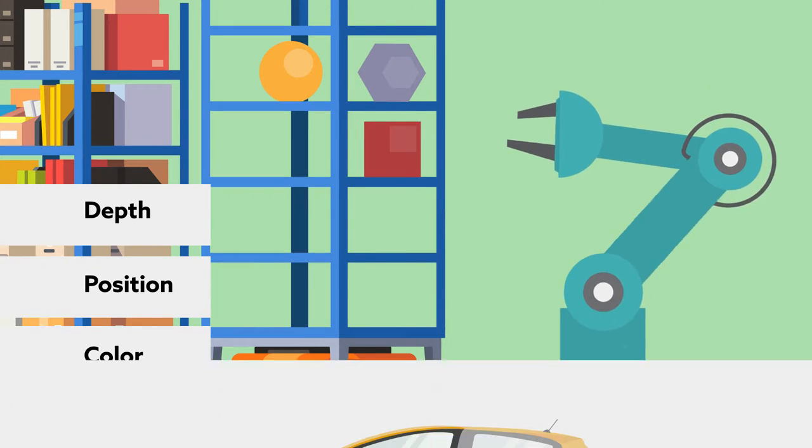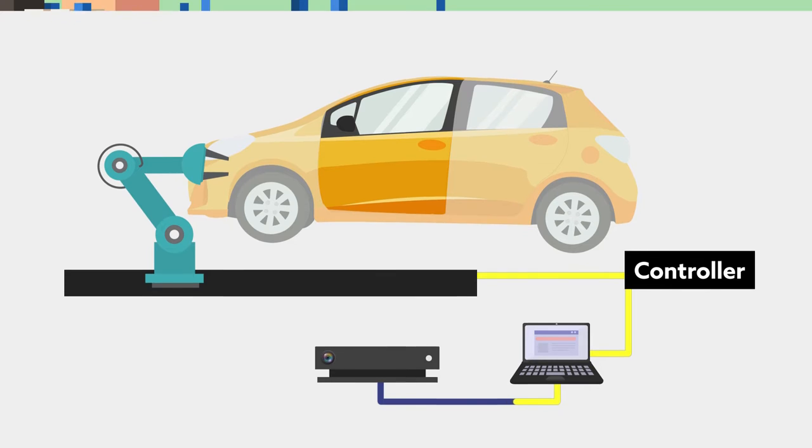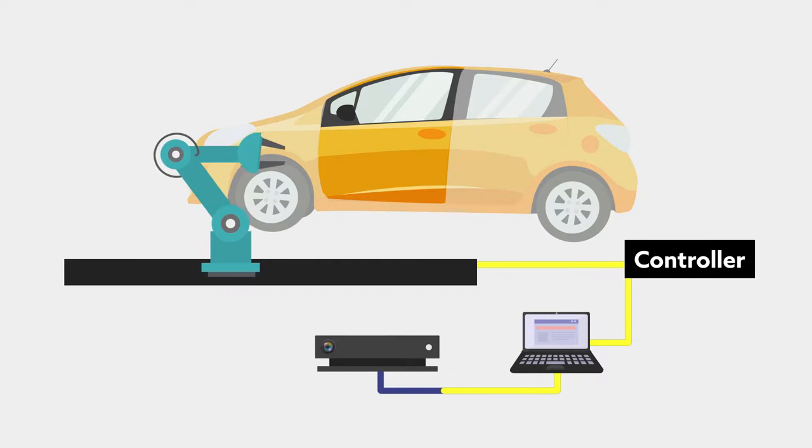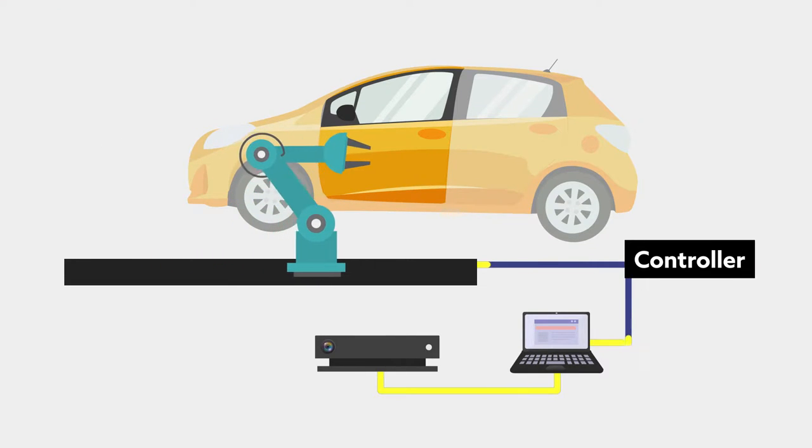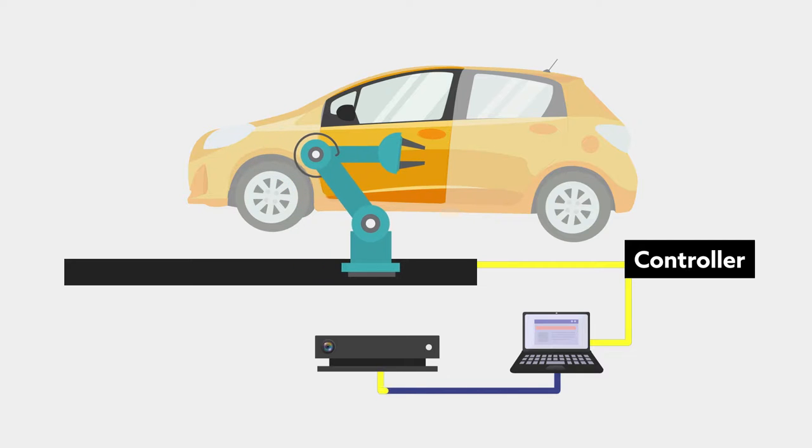The team then developed a self-tuning controller that enabled their robotic arm to seamlessly switch between different modes of operation, depending on the arm's position relative to its target, a car door.